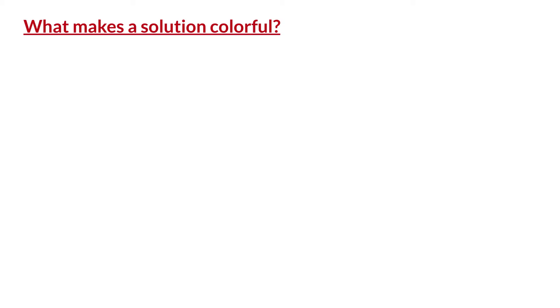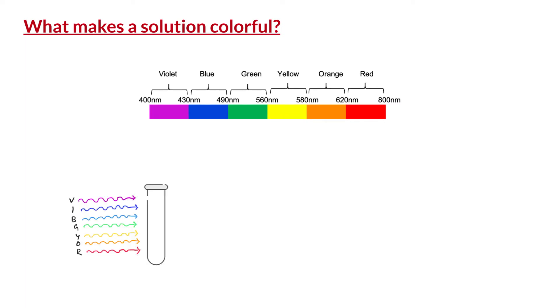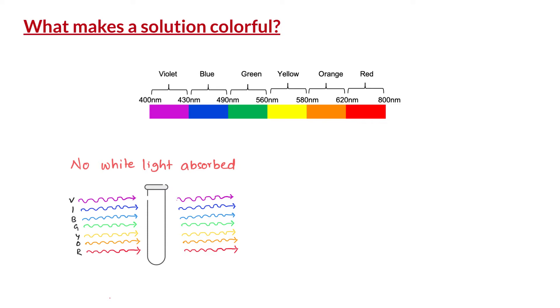First, let us discuss why some solutions are colorful while others are clear or colorless — that is, what makes a solution colorful? The white light consists of wavelengths corresponding to all seven colors in the visible spectrum, starting from violet to red. The naked eye sees the combination of all these seven colors and perceives it as white light. If we pass a beam of white light through a solution that does not absorb visible light at all, or absorbs it very weakly, the light coming out contains all seven colors — white light — and the naked eye sees the solution as clear or colorless.